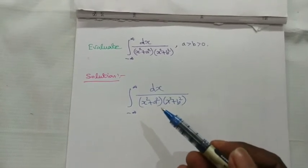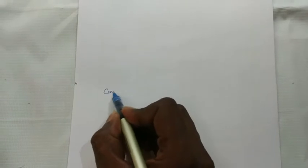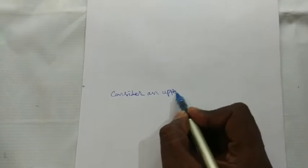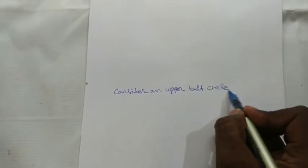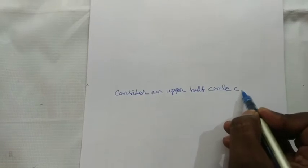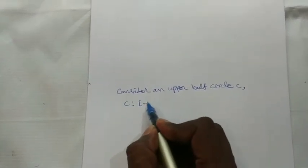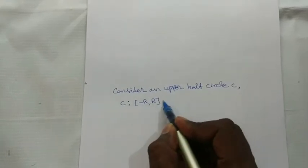This is a contour integral of type 2. In this type, we consider an upper half-circle contour C such that C is the path from minus R to plus R plus gamma.